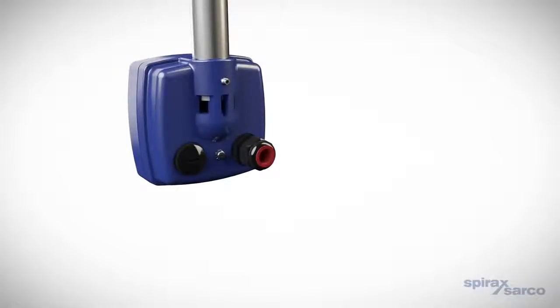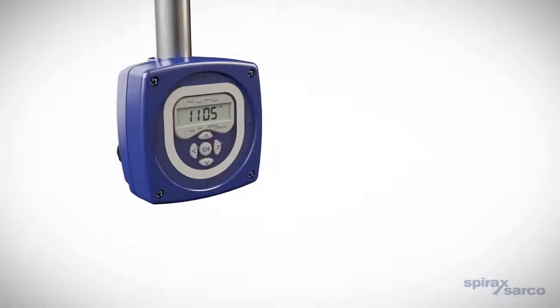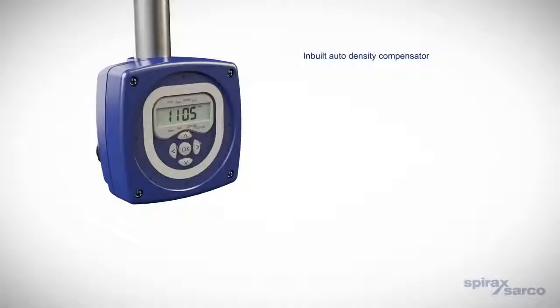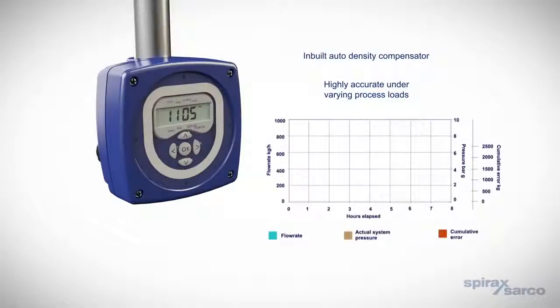Designed for steam, the TFA flow meter incorporates an inbuilt automatic density compensator, which eliminates inaccuracies caused by changes in steam density. This is necessary, as the pressure in steam systems almost always fluctuates. Unless this is taken into account, the accuracy of the measured flow results will be affected.